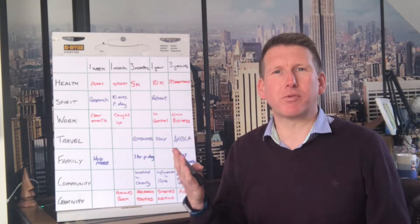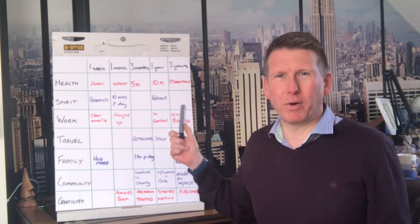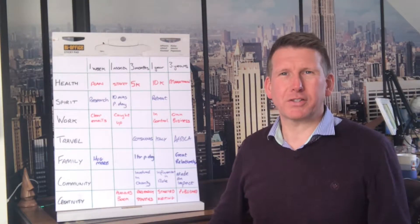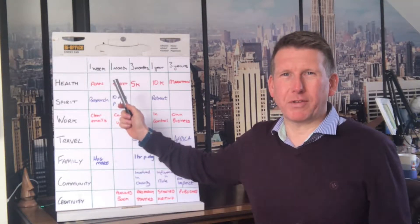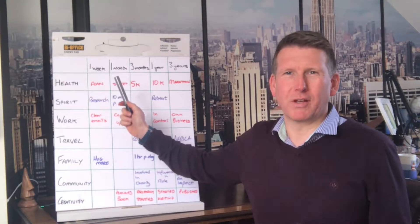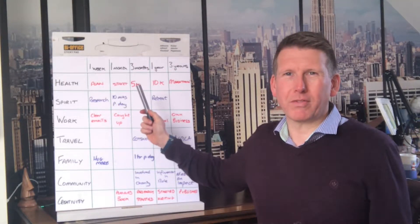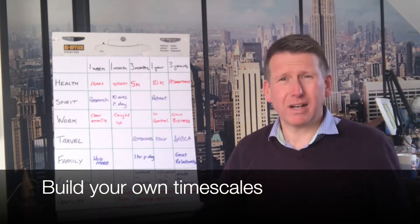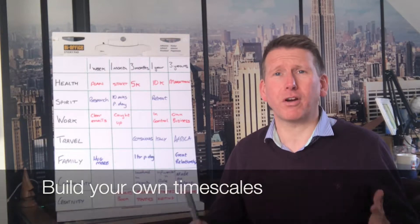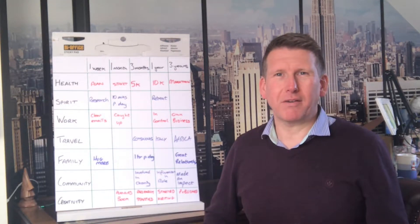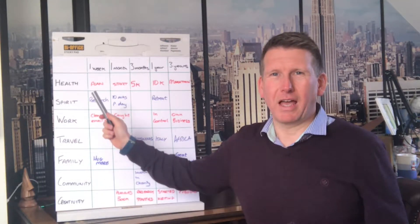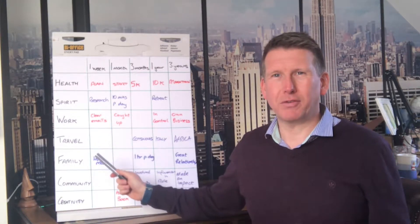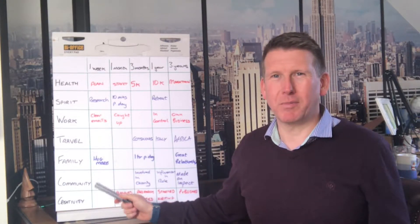We're using a simple grid here — I've filled one in already, and here's a close-up of it. As you can see, along the top we have a number of different timescales: one week, one month, three months, a year, three years, and so on. This can actually develop to a whole lifetime.